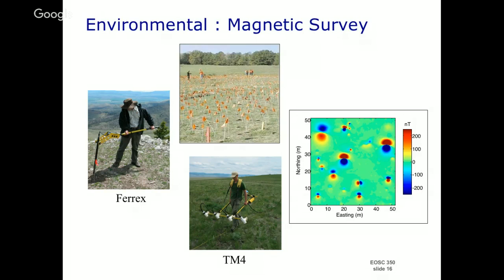You can see quite a few places, and by looking at those signatures you know where things are and maybe even how deep they might be. So we've got a problem — unexploded ordnance. What's the physical property? Magnetics. What kind of survey do we need? Something that measures magnetic field. We go out, collect those data, plot them up, maybe do some processing, and arrive at conclusions about where things might be and then dig them up.